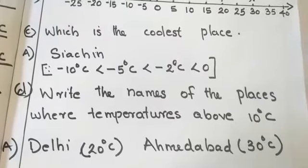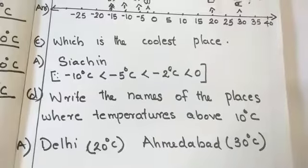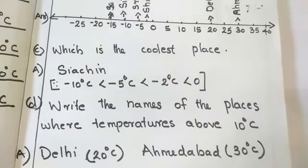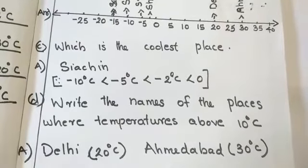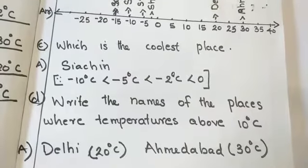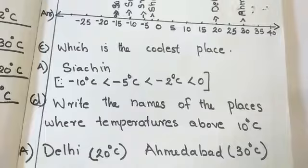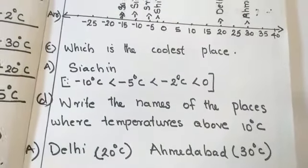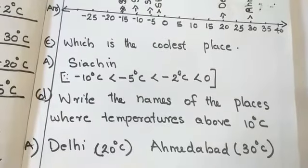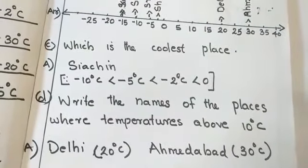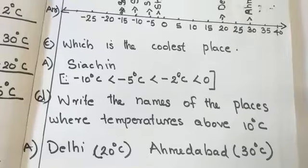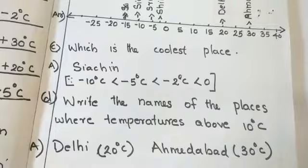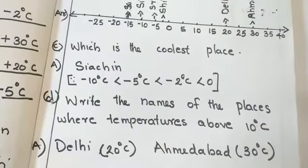Which is the coolest place? Siachin. Why? Siachin has the temperature negative 10. Negative 10 having the greater number but with negative sign. So, it is the lowest temperature and negative 10 degree Celsius less than minus 5 and it is less than minus 2 also less than 0.